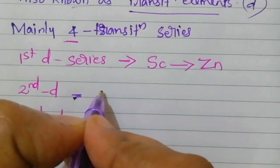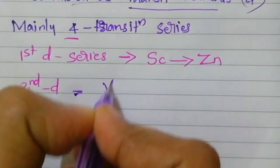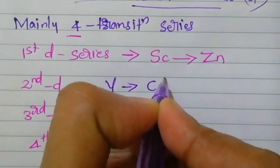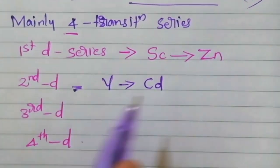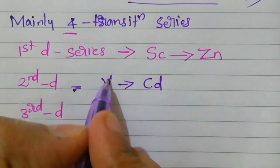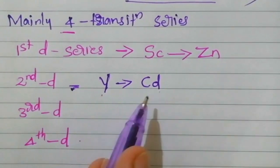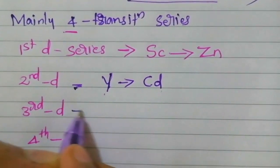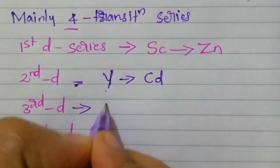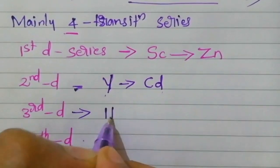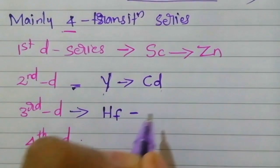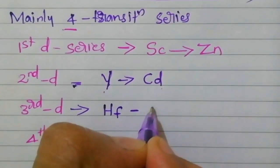The second D series is from yttrium to cadmium. The starting element Y represents yttrium. And the third D series — its first element is hafnium (Hf), ranging from hafnium to mercury (Hg).